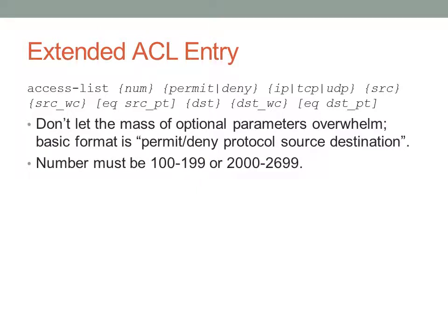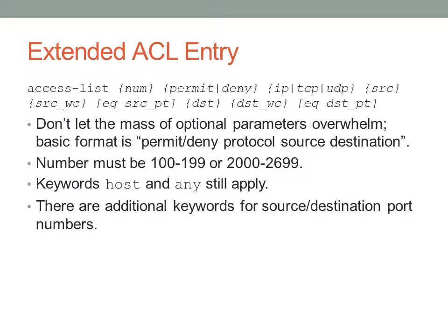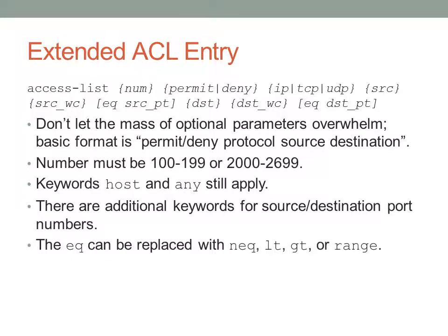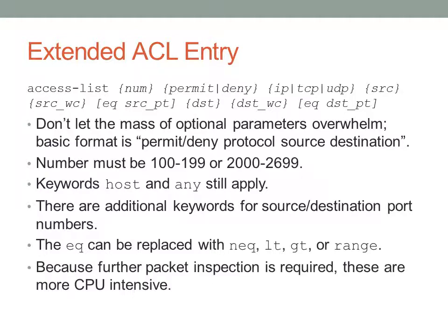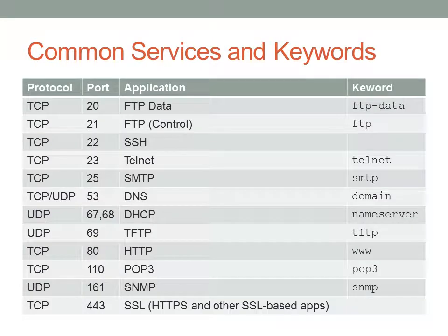Access list numbers for extended access lists are between 100 and 199, with another higher range. The host and any keywords still work for specifying source or destination. Instead of specifying a port number, you can use keywords — for example, for port 80 you can use 'www'. The EQ keyword stands for equal, meaning an entry equals a particular port. You can also specify not equal, less than, greater than, or a range of ports. Deeper packet inspection is required for extended access lists since you're matching ports and protocols, so these tend to be more CPU intensive.